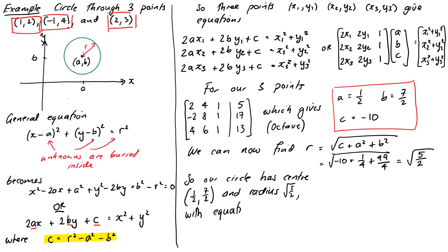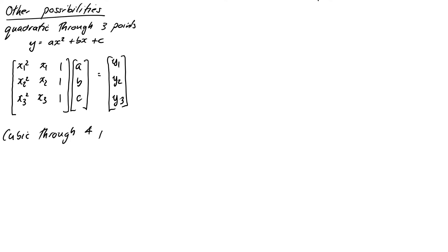So the equation for our circle is therefore x minus 1 half squared plus y minus 7 over 2 squared equals 5 over 2. Don't forget we square the R at the end there. Okay, so in summary, we can actually construct all kinds of different things in this way. So, for example, you can find a quadratic A x squared plus B x plus C through 3 points. So here's the matrix system that you'd solve. Or you could do it with a cubic. You could construct the cubic y equals A x cubed plus B x squared plus C x plus D. This time you'd need 4 points, and here is the system that you would solve it with.